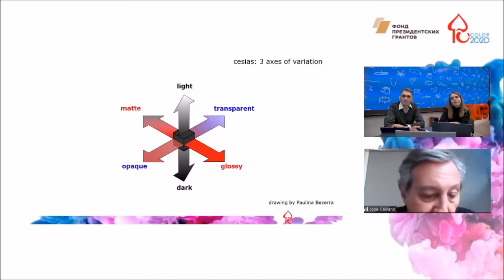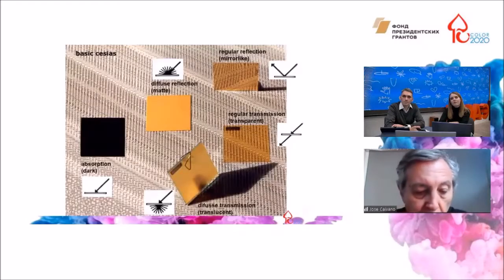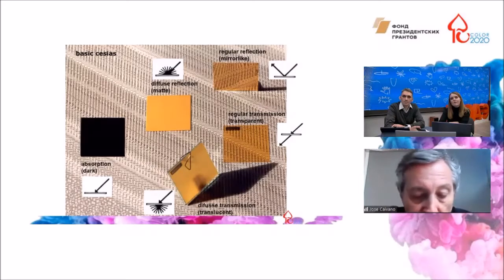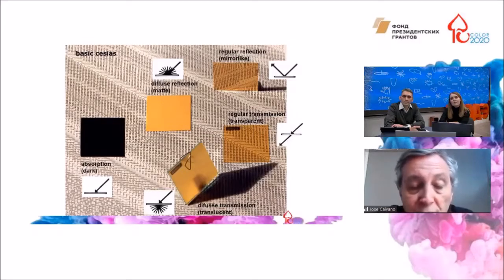Cessia is defined as an aspect of visual appearance that accounts for sensations that vary along three axes: transparent, opaque, glossy, matte, and light, dark. Objects may produce different spatial distributions of light, and this constitutes the stimulus for the perception of cessia.